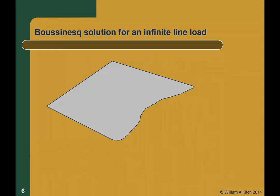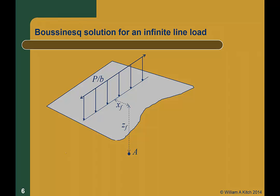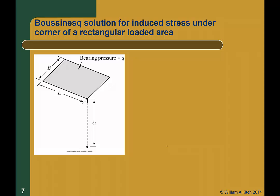Boussinesq's basic solution for a point load has been integrated over many shapes to produce solutions for other surface loads. For example, if we integrate the point load solution infinitely in one direction, we have the solution for a line load applied to the ground surface. For a point A located x_f to the side and x_z below the line load, the induced stress delta sigma z is given by this equation. We can also integrate the Boussinesq point load solution over an area to determine stresses induced by a load applied over a finite sized area. When we compute induced stresses due to applied surface stresses, we generally formulate the solution as delta sigma z equals I sub sigma times the applied surface stress q, where I sub sigma is called the stress influence factor.